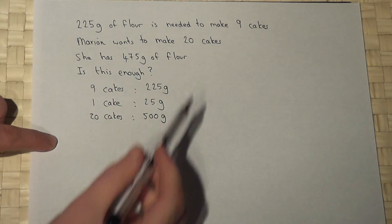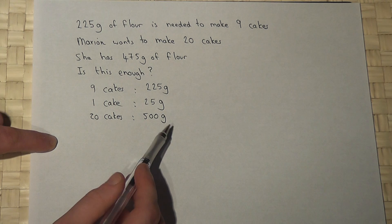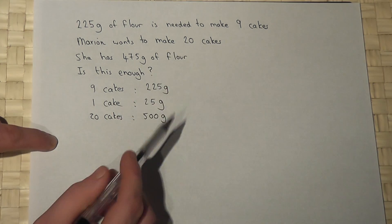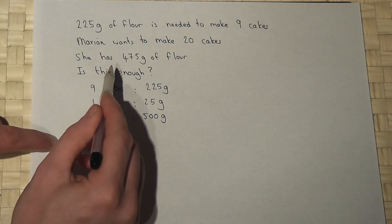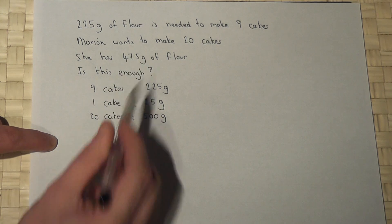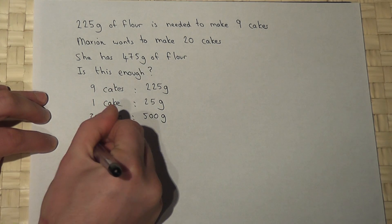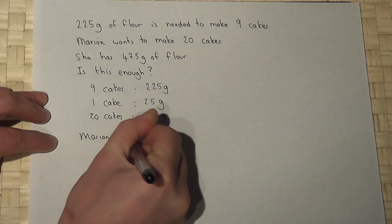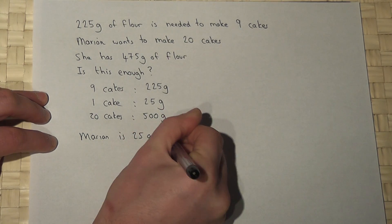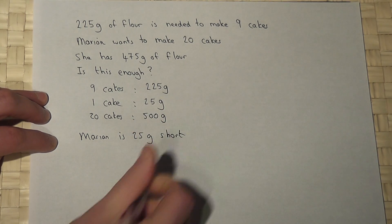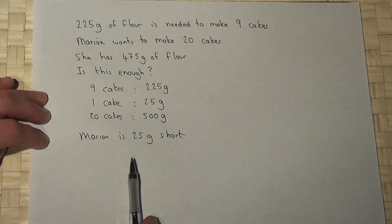So Marion requires 500 grams or half a kilogram of flour to make 20 cakes. She has only got 475 grams of flour so therefore Marion is 25 grams short. So no she's not got enough to make 20 cakes.